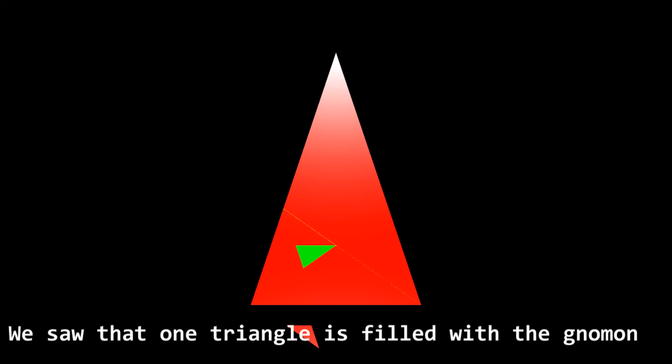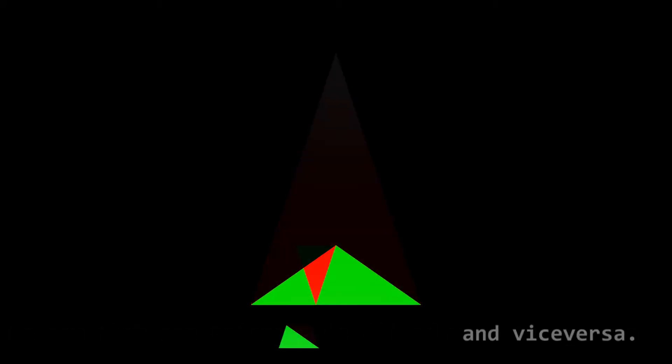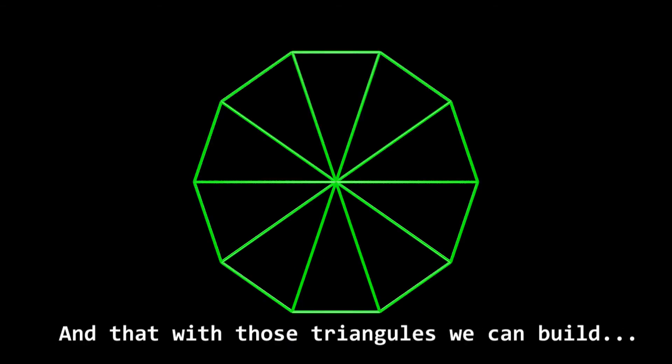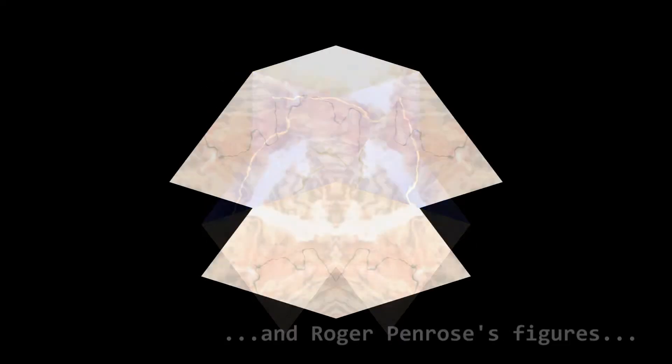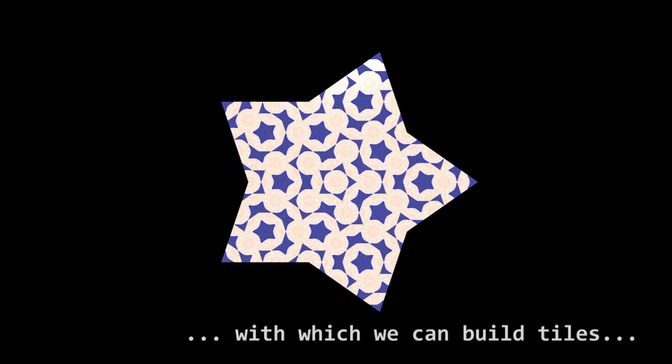We saw that one triangle is filled with the Gnomon, and vice versa, and that with those triangles we can build decagons, pentagons, pentagrams, darts, kites, rhombuses, and Roger Penrose's figures, discovered in 1974, with which you can build tiles that fill surfaces completely.